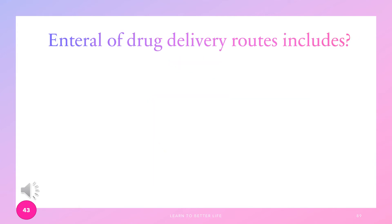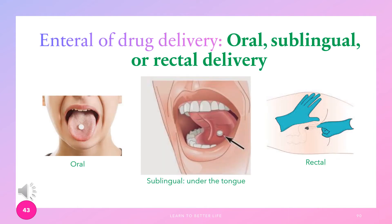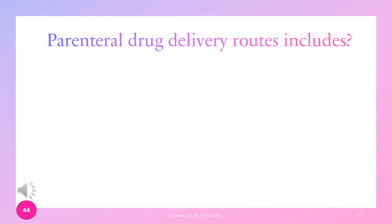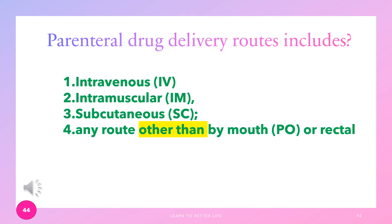Enteral drug delivery routes include oral, sublingual, or rectal delivery. Parenteral drug delivery routes include intravenous (IV), intramuscular (IM), subcutaneous (SC), and any route other than by mouth (PO) or rectal.